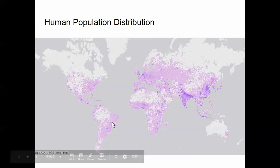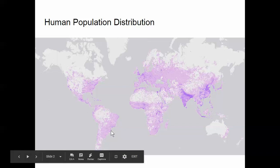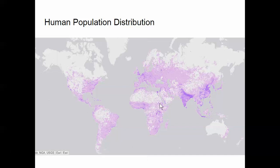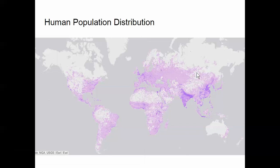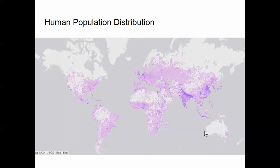If we look at South America, we see this kind of big hole here — anywhere that's light means very few people; darker purple means more people. You'll notice concentrations of purple here and here. There's also a very distinct line in Africa that leaves a major gap area, and you'll notice this kind of line here as well.